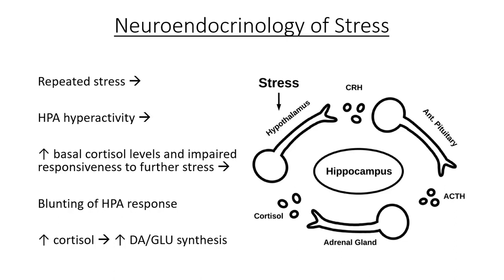Increased cortisol contributes to an upregulation in dopamine and glutamate synthesis. Both of these neurochemicals, as discussed in a previous lecture, are strongly implicated in psychotic symptoms.